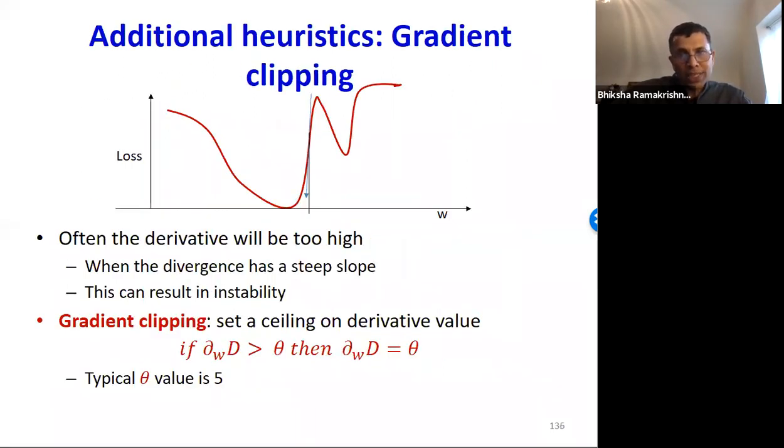Another common heuristic is gradient clipping. Often, the derivative of the divergence with respect to some parameter may be too high because the divergence has a very steep slope at some point with respect to that parameter. And this can prevent your learning from converging or can take your gradient descent into a bad place. So, gradient clipping sets a ceiling on the derivatives, like say, five. If the derivative exceeds this ceiling, the threshold, then the derivative is capped at the ceiling itself.